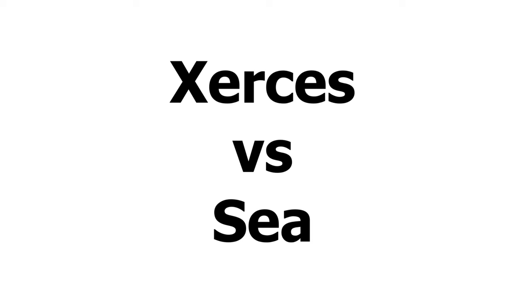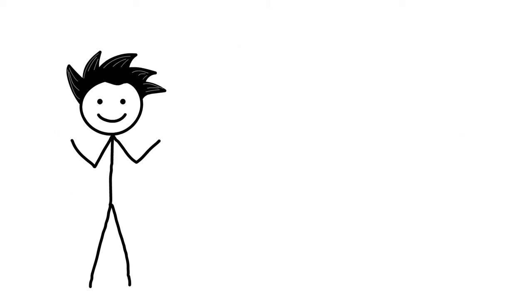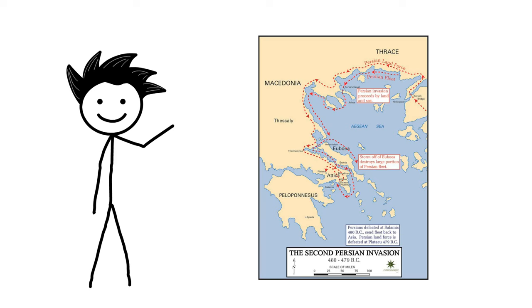Xerxes I vs. the Sea. Xerxes I was a Persian ruler who served as the fourth king of kings of the Achaemenid Empire. He was known for his massive invasion of Greece from across the Hellespont, a campaign marked by the battles of Thermopylae, Salamis, and Plataea.